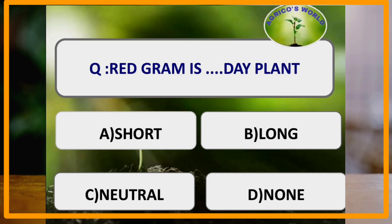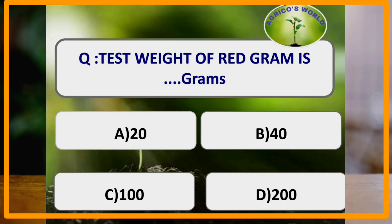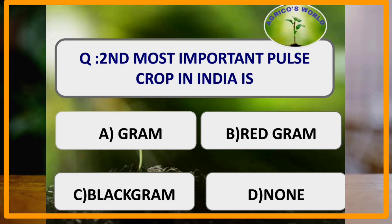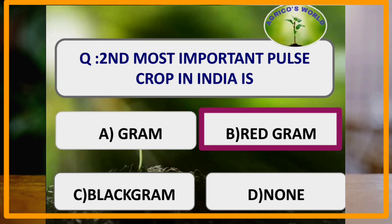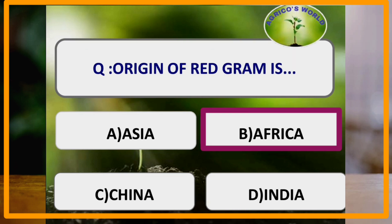Red gram is a short day plant. Test weight of red gram is 100 grams. The second most important pulse crop in India is red gram, and the first most important pulse crop in India is gram. Origin of red gram is Africa — red gram is originated from Africa.